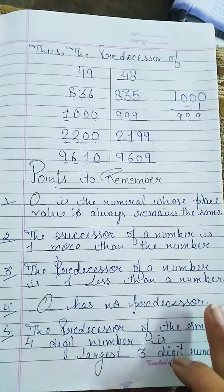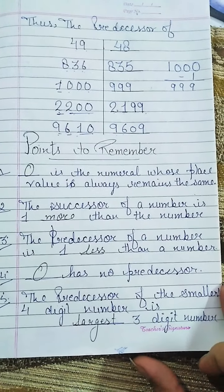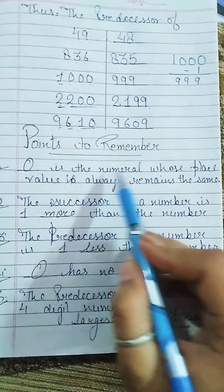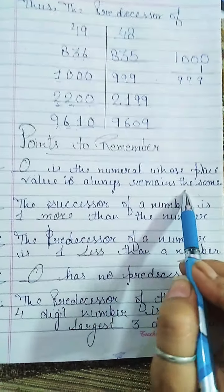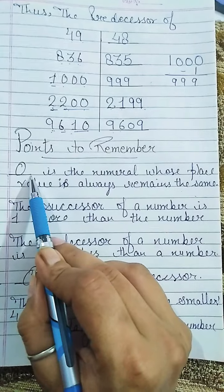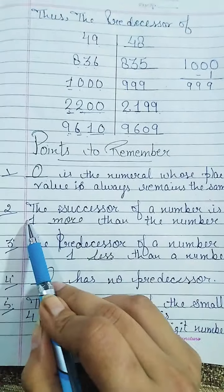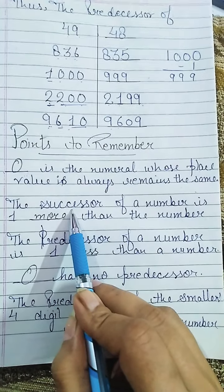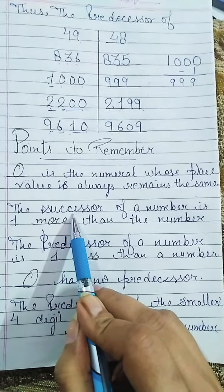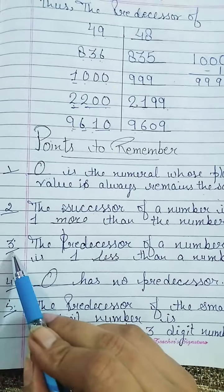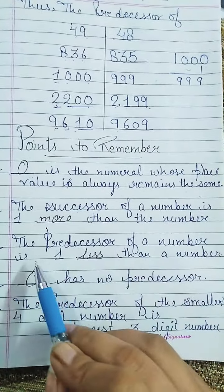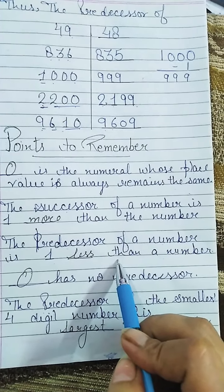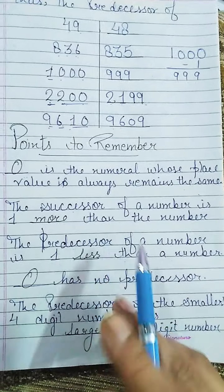Now the chapter's key points to remember. Point 1: Zero is a numeral whose place value is always zero — it always remains the same. Point 2: The successor of a number is 1 more than the number — when we add 1 to any digit, we get the successor of that number. Point 3: The predecessor of a number is 1 less than the number — when we subtract 1 from any number, we get its predecessor.